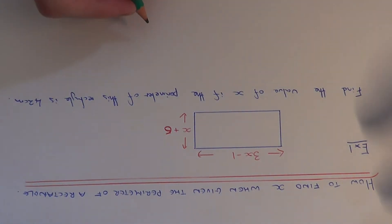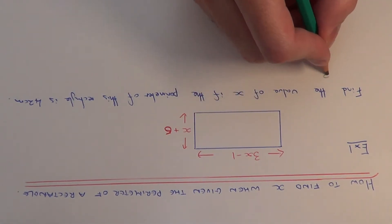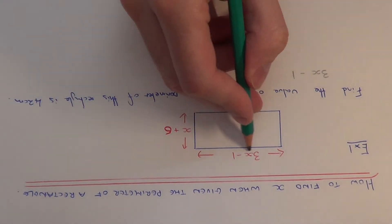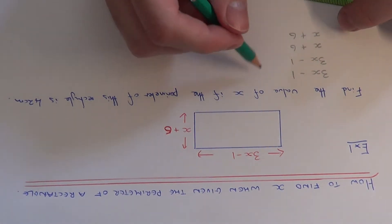The first thing we need to do then is to add up all the sides of the rectangle to give the total perimeter in terms of x. We've got two 3x minus 1 sides and we've got two sides which are x plus 6. So if we just add these up here.